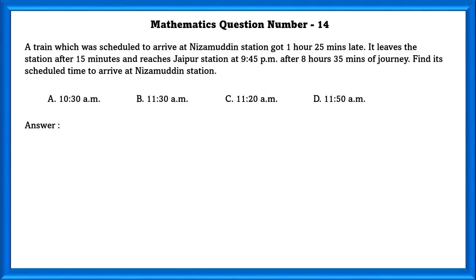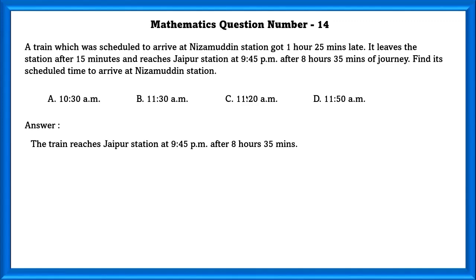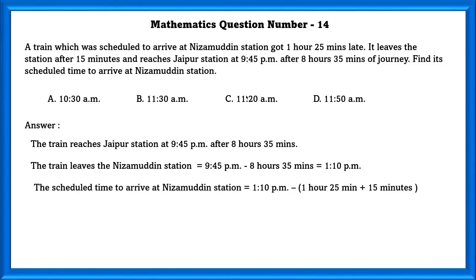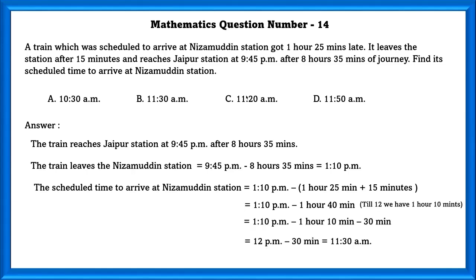Mathematics question number 14. A train scheduled to arrive at Nizamuddin station got 1 hour 25 minutes late. It leaves the station after 15 minutes and reaches Jaipur station at 9:45 pm after 8 hours 35 minutes of journey. The train leaves Nizamuddin at 9:45 pm minus 8 hours 35 minutes, which equals 1:10 pm. The scheduled arrival time is 1:10 pm minus 1 hour 25 minutes plus 15 minutes, which equals 1:10 pm minus 1 hour 40 minutes. Since till 12 we have 1 hour 10 minutes, the answer is 1:10 pm minus 1 hour 10 minutes minus 30 minutes, which equals 11:30 am.